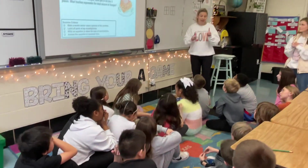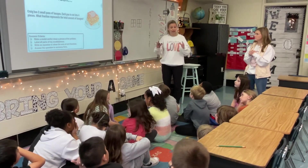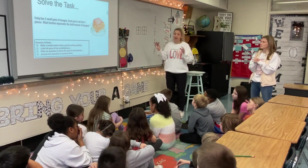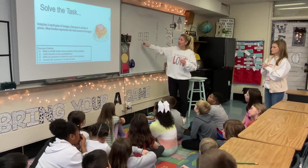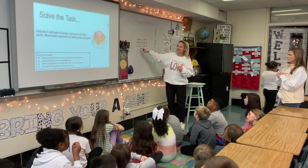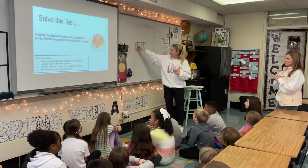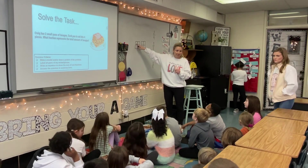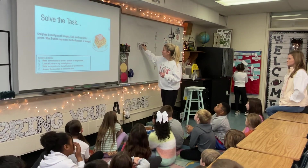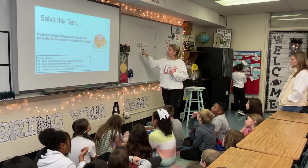Now listen, boys and girls. You had some great conversations and you're really thinking about it. Now we're going to come together and find the correct answer. Here are my two small pans of lasagna. Each pan is cut into four pieces. I want you to look at this first pan. If I eat this piece right here, what fraction did I eat? One-fourth. I ate from this pan one-fourth — correct? Because there are how many pieces in this pan? Four. And I ate one of them.